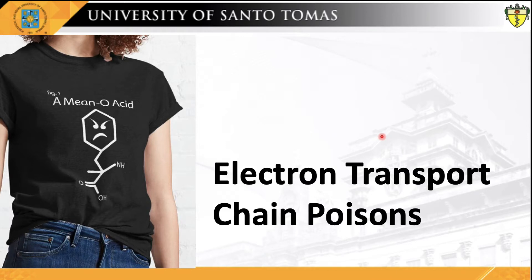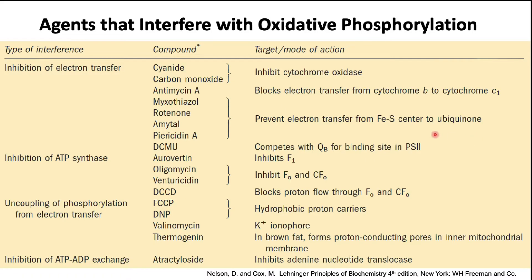Let's now move on to the different agents that interfere with oxidative phosphorylation. These agents are referred to as poisons since they either disrupt the flow of electrons in the electron transport chain or inhibit ATP synthase. Their overall effect is the diminution or failure to produce ATP for the cell's use. These agents may be classified according to the complex they interfere with or through their mechanisms of action.